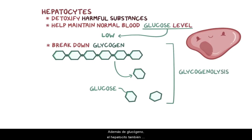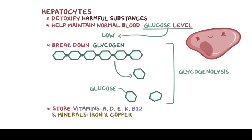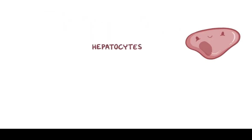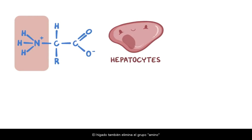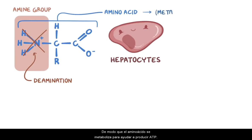In addition to glycogen, hepatocytes also store certain vitamins, like A, D, E, K, and B12, as well as some minerals like iron and copper. The liver also removes the amine group from amino acids, using a process called de-amination, so that the amino acids can metabolize to help produce ATP.